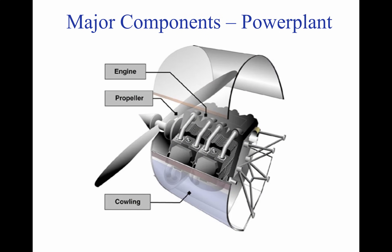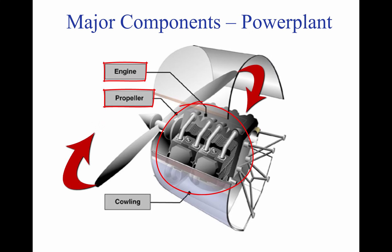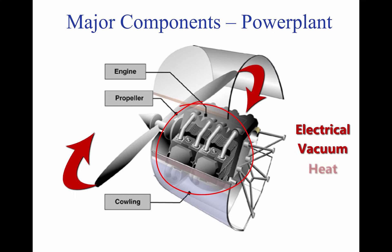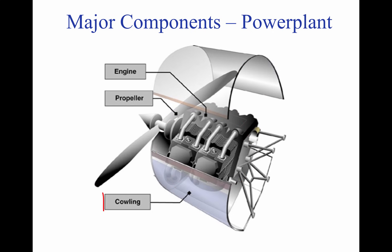The power plant usually includes both the engine and the propeller. The primary function of the engine is to provide the power to turn the propeller. It also generates electrical power, provides a vacuum source for some flight instruments, and in most single-engine airplanes, provides a source of heat for the pilot and passengers. The engine is surrounded by a cowling, which makes the engine more streamlined and provides a way to duct air over the cylinders.